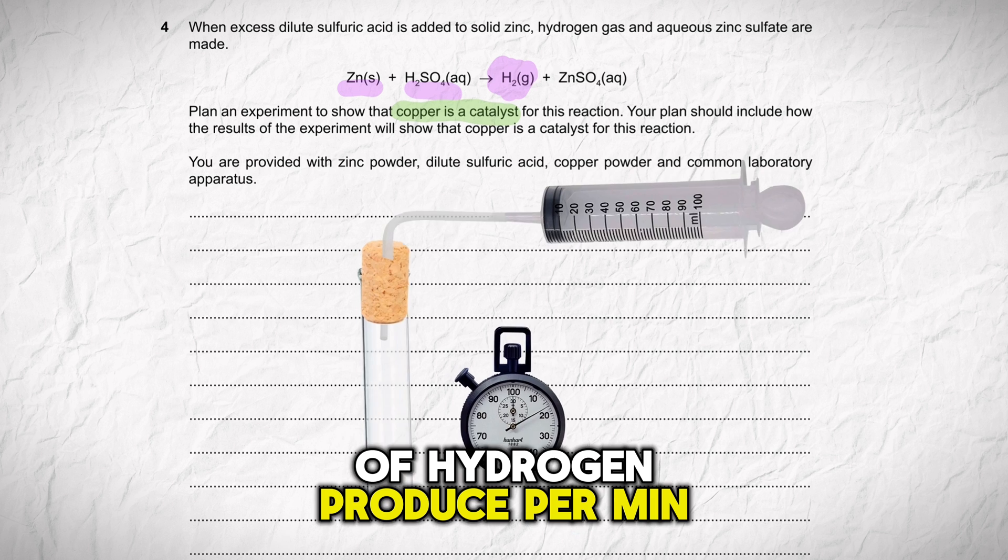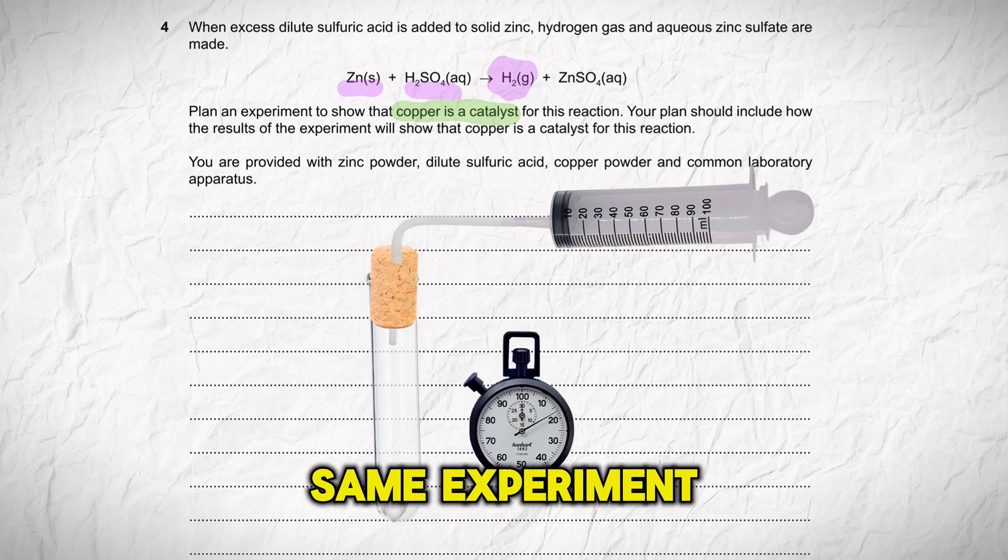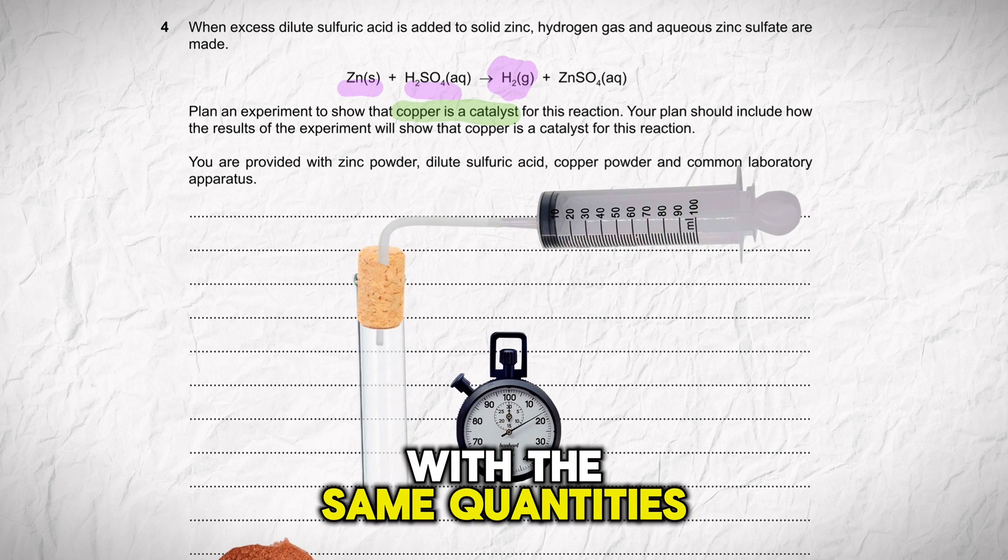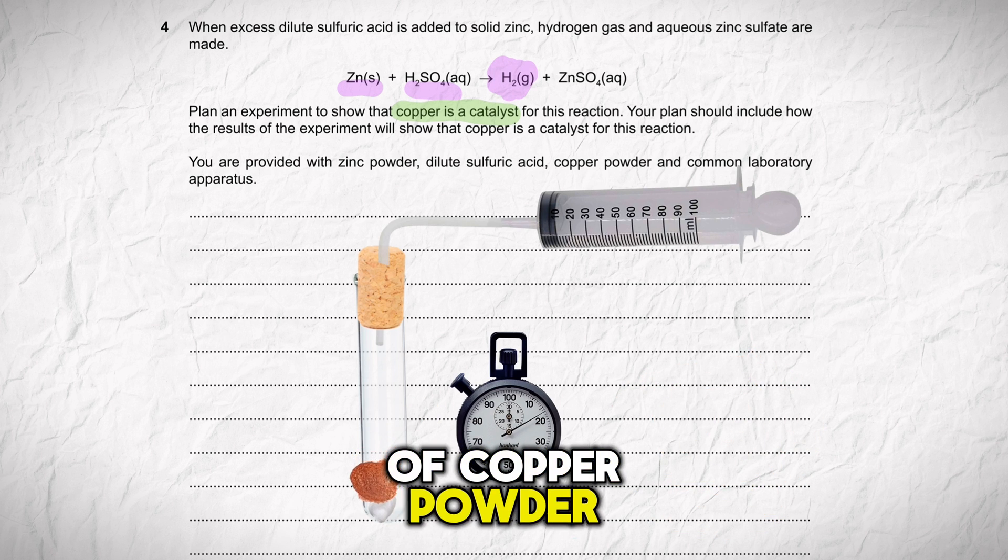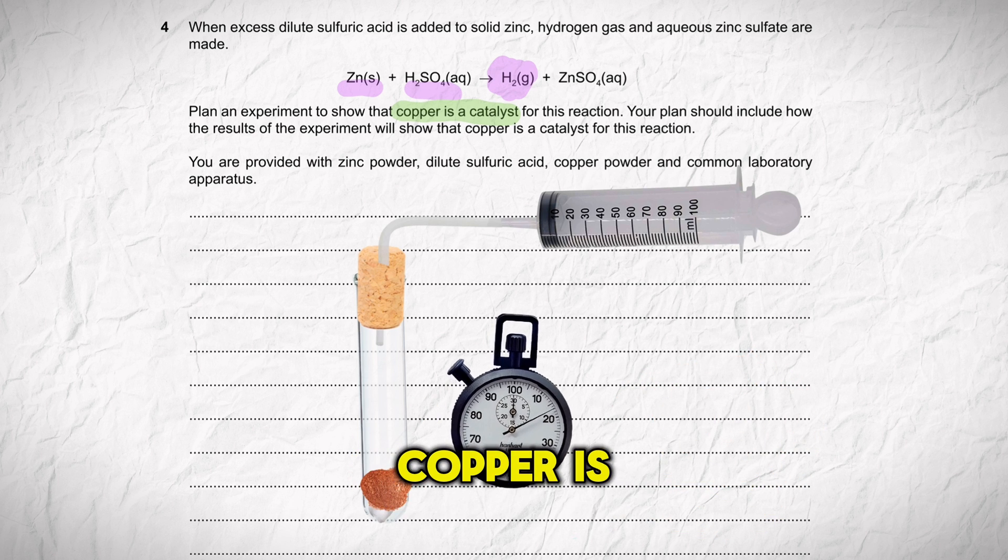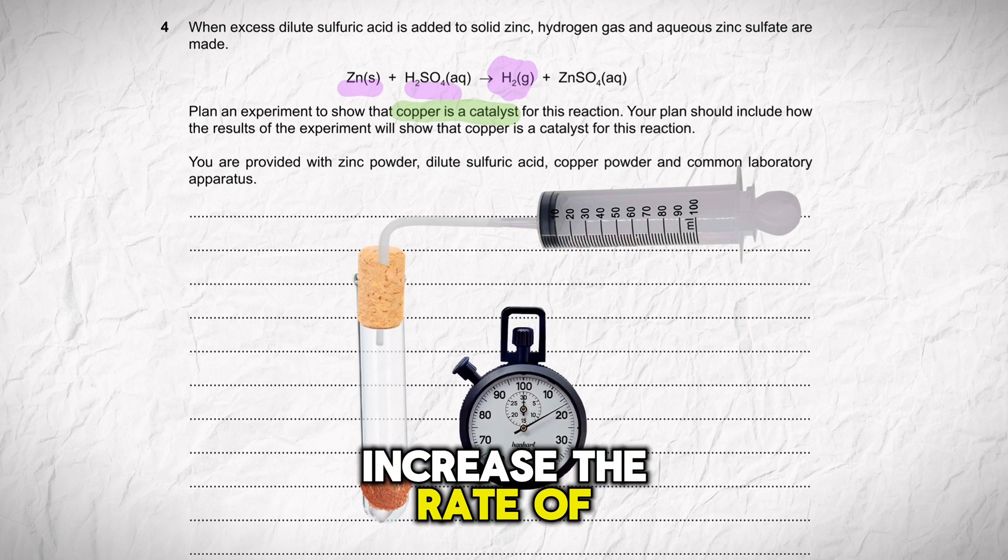Then I'll repeat the same experiment with the same quantities, but this time I'm going to add a fixed mass of copper powder. Being a catalyst, copper is supposed to increase the rate of reaction, so I'm going to get more volume of hydrogen in less time.